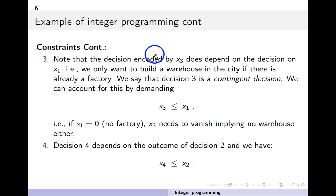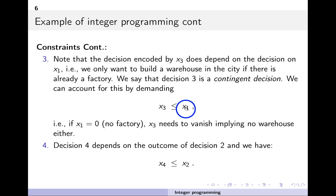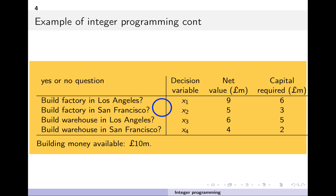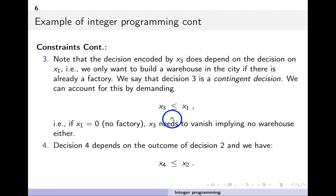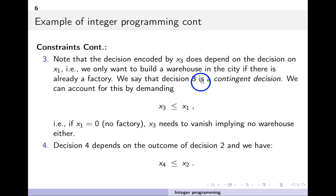The other constraint is that we only want to build a warehouse where there's a factory. So if we build a factory at x1 in Los Angeles, we only want a warehouse there too. This is captured by the constraint x3 is less than or equal to x1. If we don't build a factory in Los Angeles — x1 is zero — then x3 is constrained to be zero as well, so no warehouse is built there. This is called a contingent decision: decision 3 depends on decision 1.